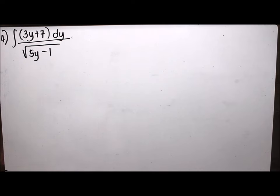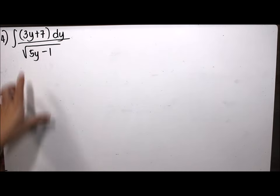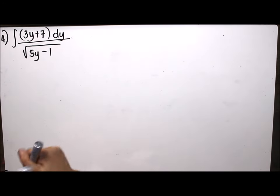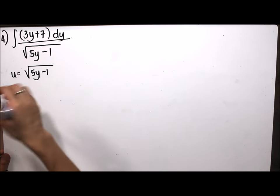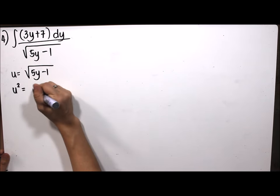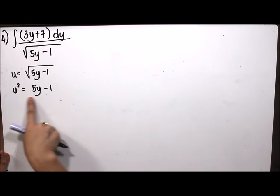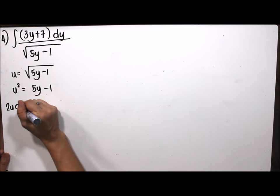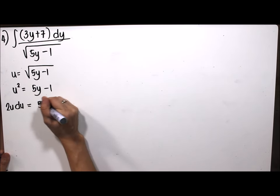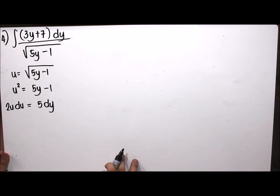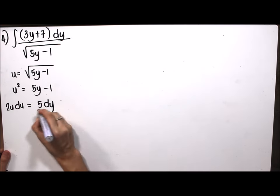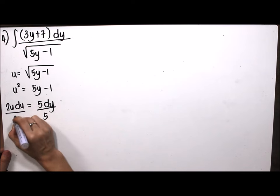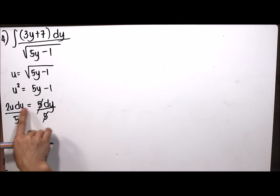Example number 4: the integral of 3y plus 7 dy divided by the square root of 5y minus 1. We let u equal the square root of 5y minus 1, so u squared equals 5y minus 1. Differentiating gives 2u du equals 5 dy, so dy equals 2u du over 5.